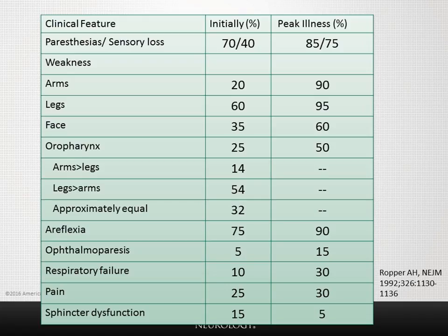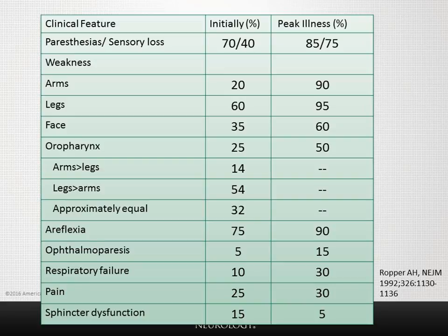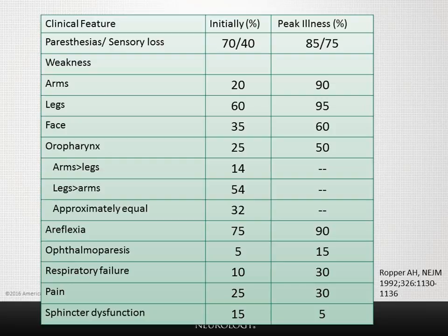This table is from the review by Dr. Alan Roper in the New England Journal of Medicine in 1992. Paresthesia are frequent initially in approximately 70 percent of patients, but sensory impairment is uncommon early. At the peak of illness, both paresthesia and sensory impairment are seen in the vast majority. Weakness involves the legs more than the arms initially, but at peak involves both arms and legs in most patients, with legs more affected in over half and equal weakness in about a third.